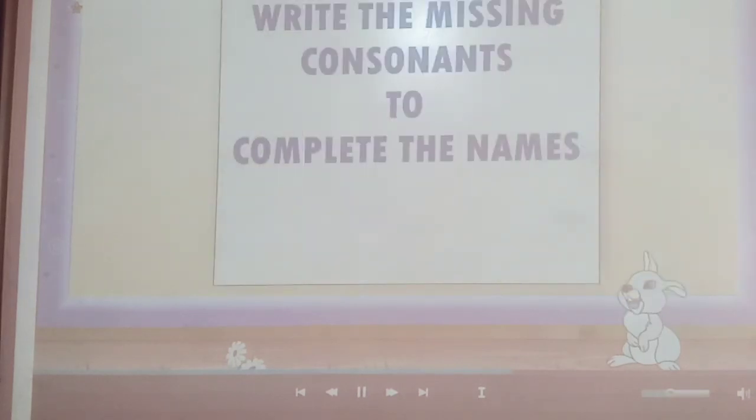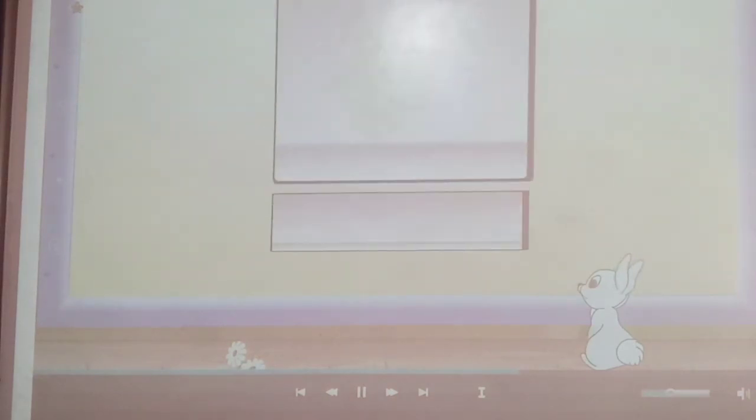Now, I will give you a tough question. You have to write the missing consonants to complete the names. These are grapes. The missing consonants are G, R, P, and S.